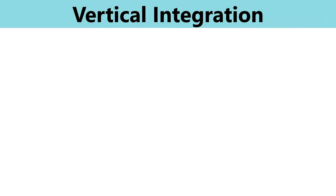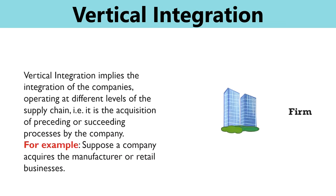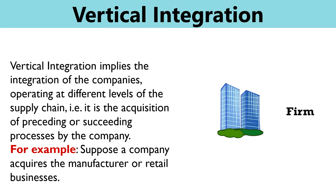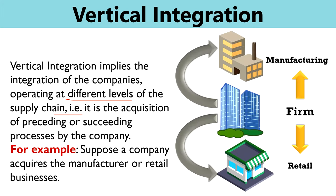Vertical integration is the competitive strategy whereby a firm internalizes those operations that are performed by the suppliers or distributors up or down the value chain. Such an integration results in greater control over the entire process of the supply chain. It implies the integration of companies operating at different levels of the supply chain — that is, it is the acquisition of preceding or succeeding processes by the company.